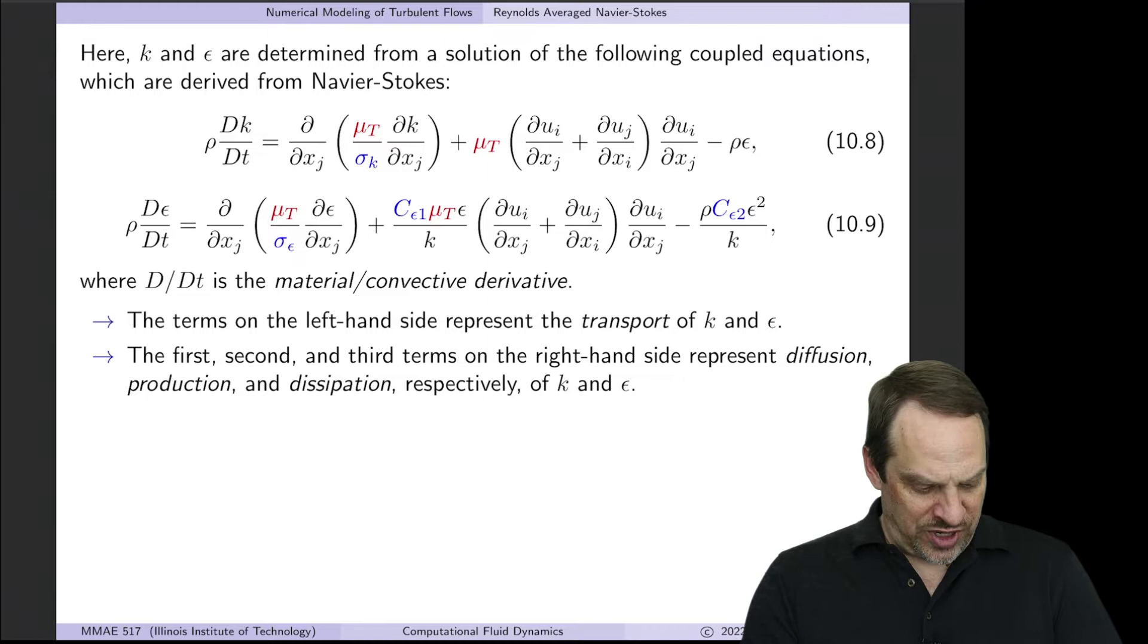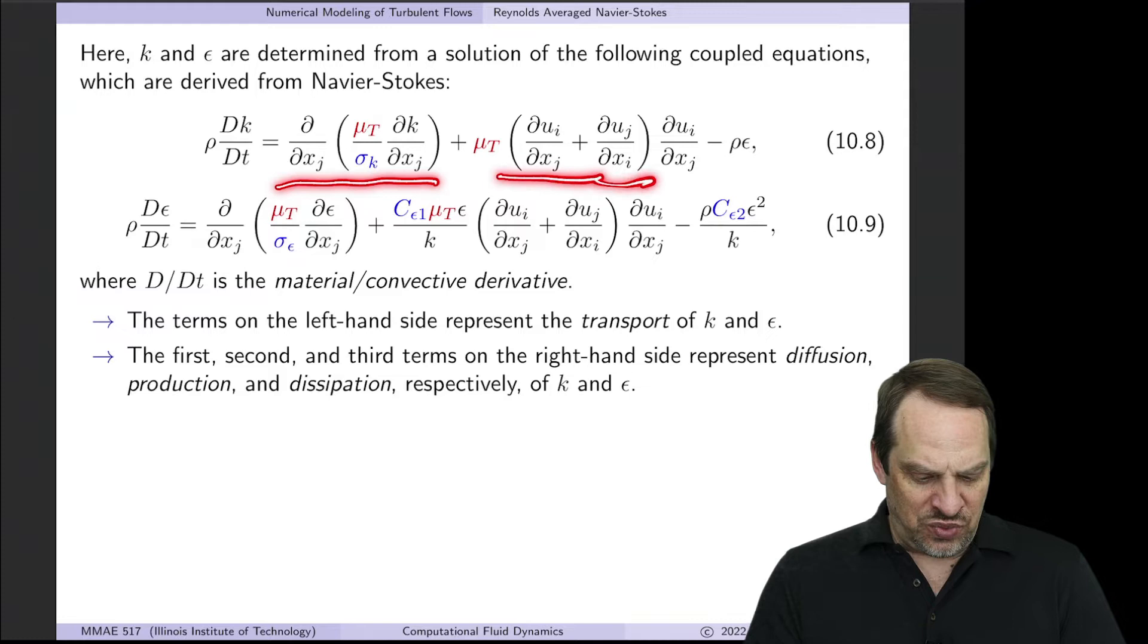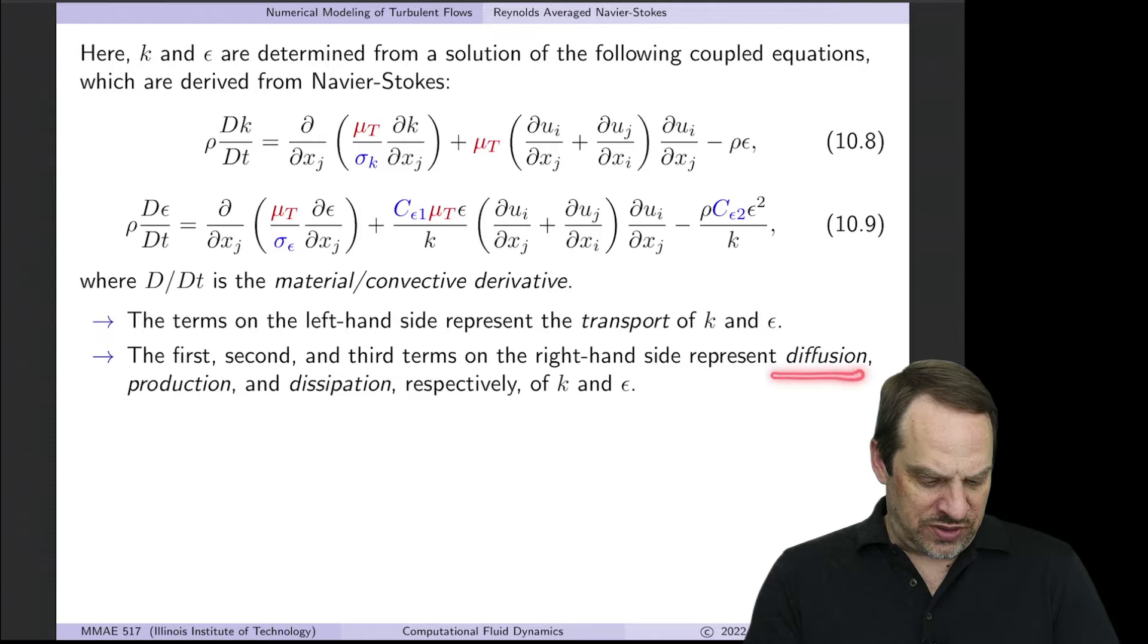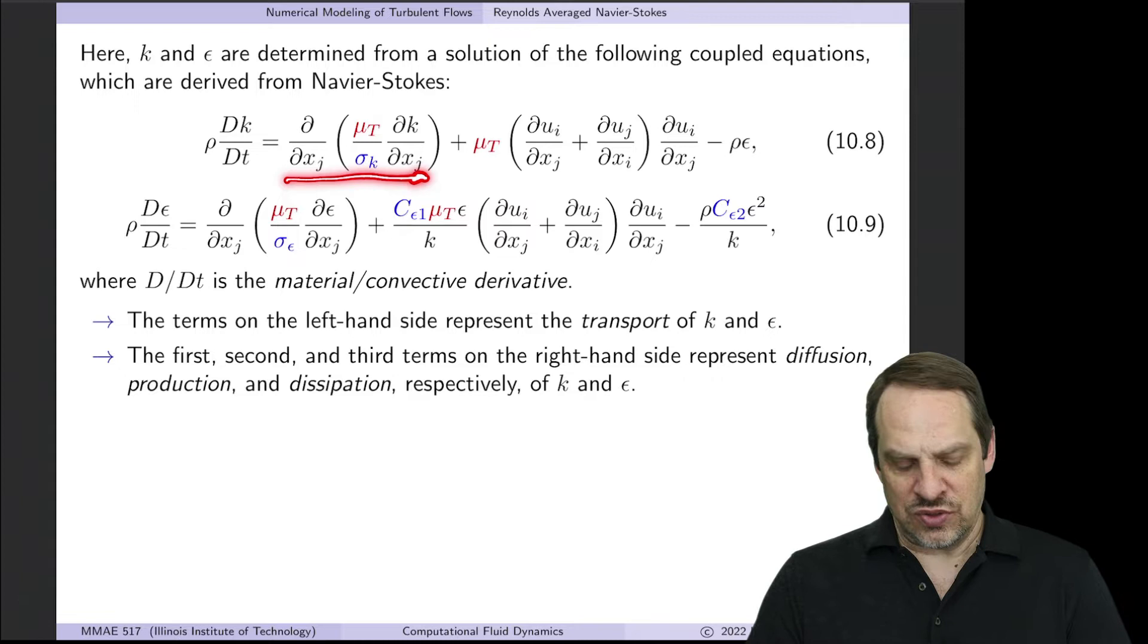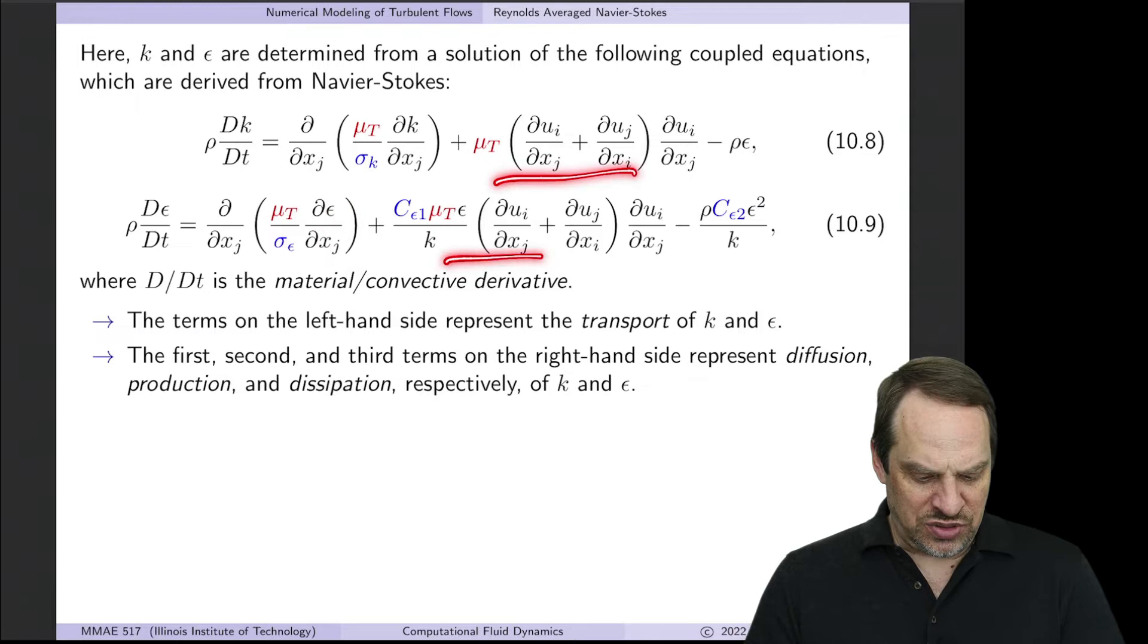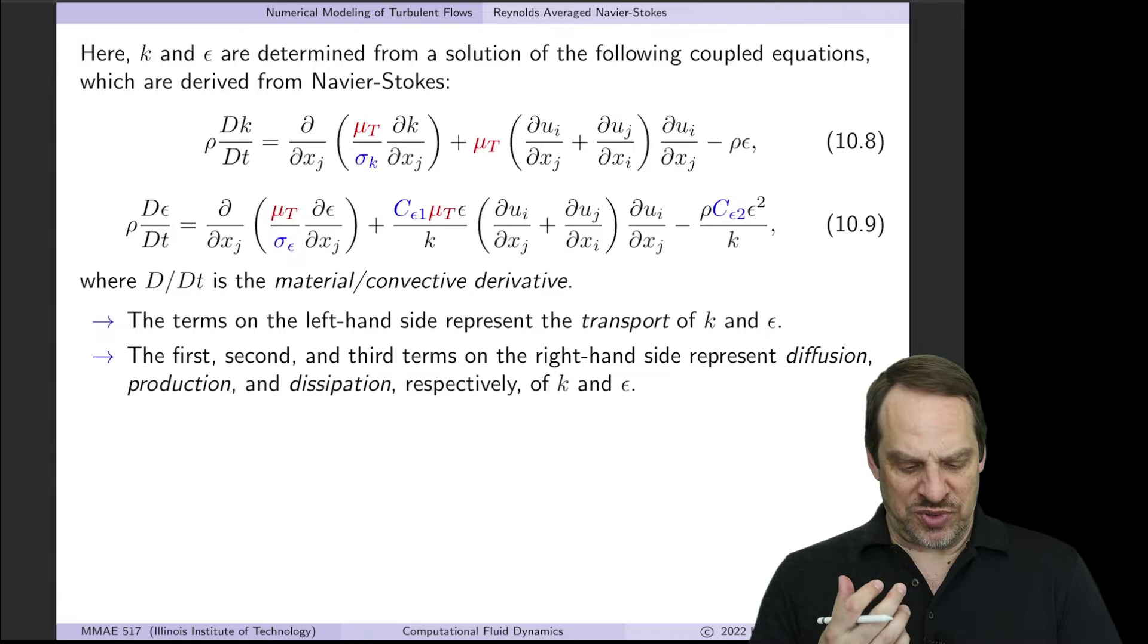Here are the two equations. On the left, I'm writing these as material derivatives with capital D. We have the convection or transport terms on the left-hand side, transport of k and transport of epsilon. On the right, we have three terms in each: the diffusion, that's the first term; the production, that's the second term; and the dissipation, that's the third term. These are balances of k and epsilon.